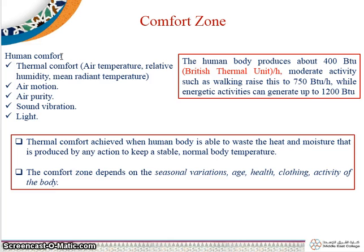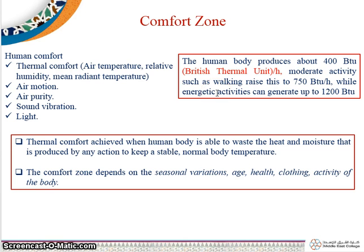Comfort zones — where does the human feel comfort? The human body produces about 400 British thermal units per hour. Moderate activities such as walking raise this to 750 BTU per hour, while energetic activities can generate up to 1200 BTU.